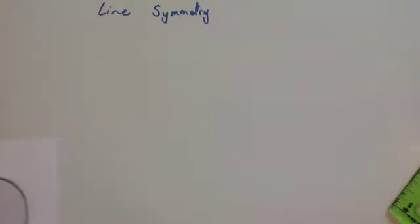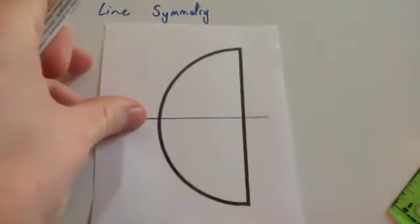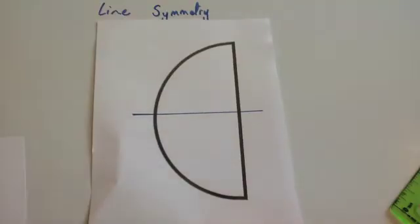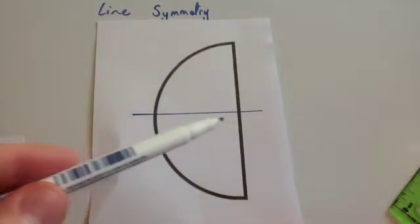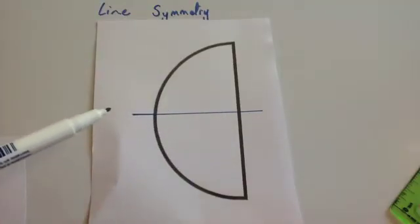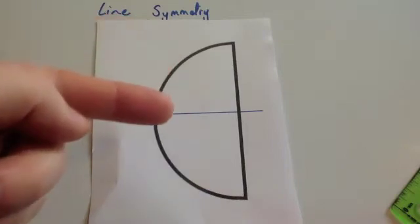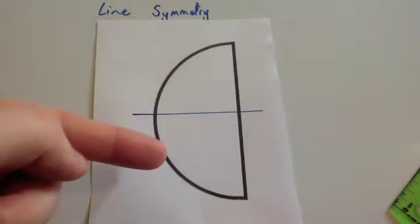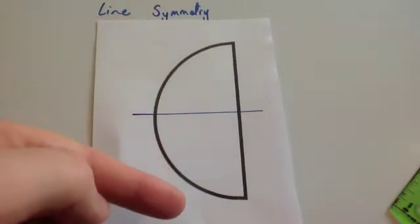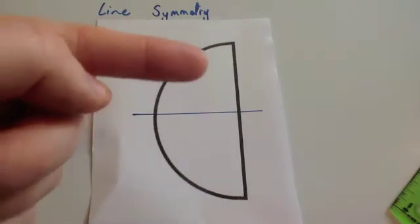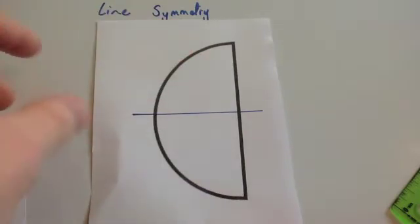Let's have a look at another shape. Here we've got a semicircle. This one has got a horizontal line of symmetry through the middle. We've got a rectangle. Again, if you were to fold it down, it would fit exactly on top of itself. And likewise, if you fold it up, it would fit on top of itself.